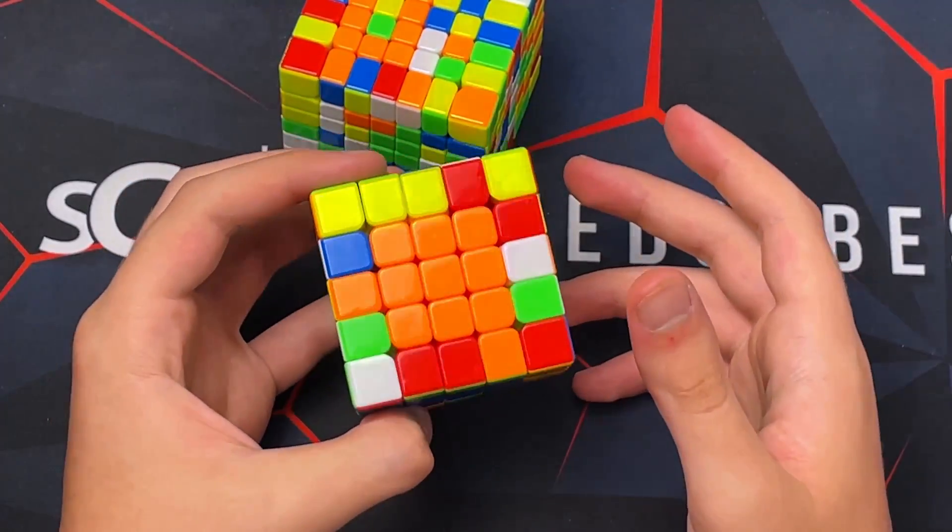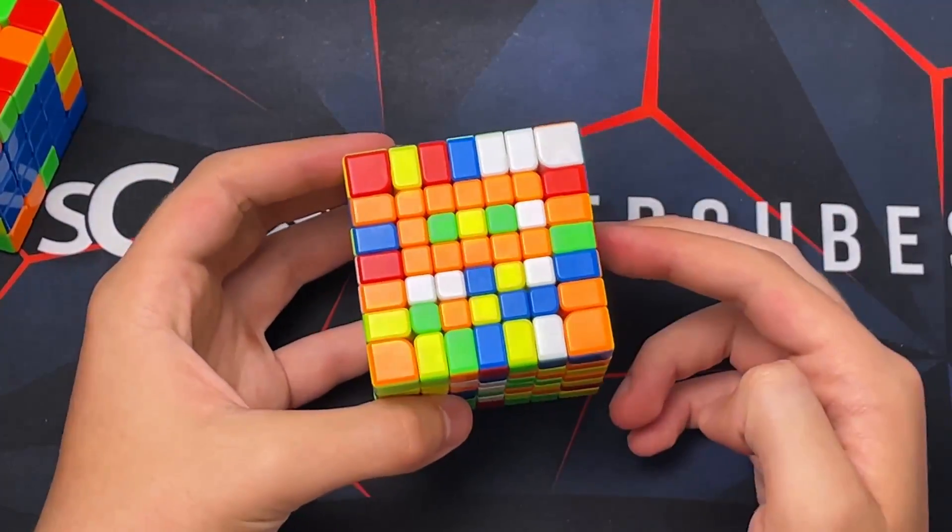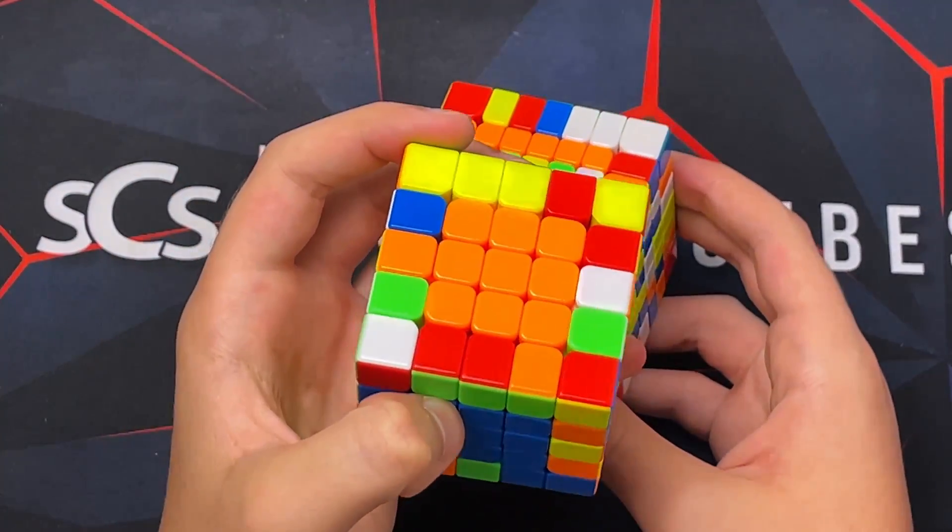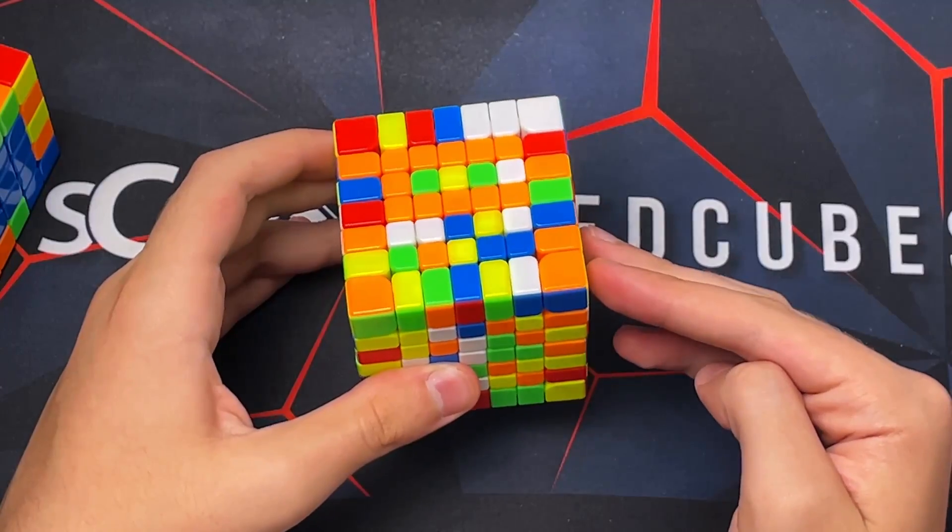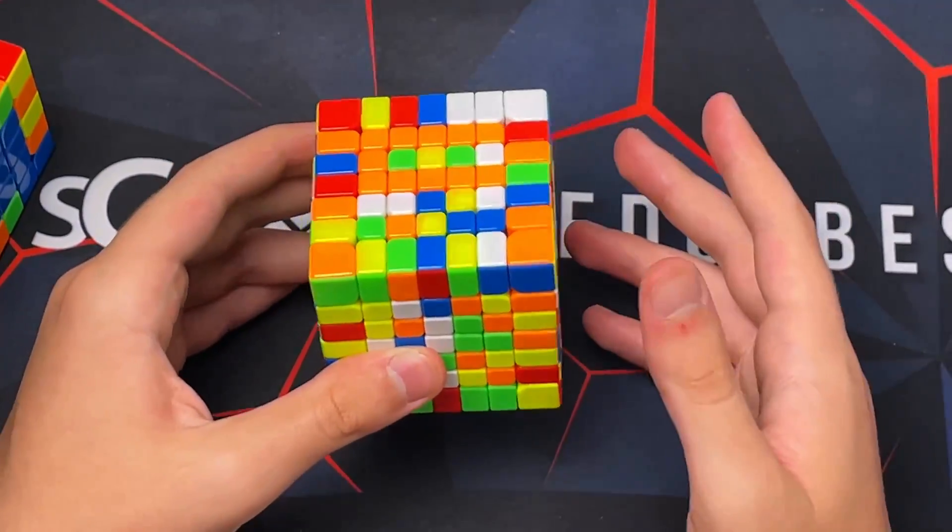I recommend learning some 5x5 before you jump right into 7x7. You could just learn it straight on the 7x7, but I feel like it's easier just to do on 5x5 and get good at 5x5, which is what I did first. After I got good at 5x5, I started 7x7, and I was able to reach sub 5 just within a few days.